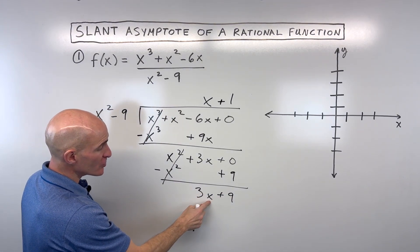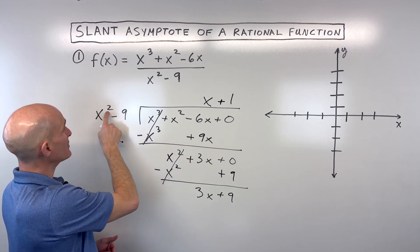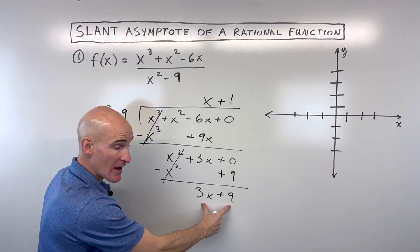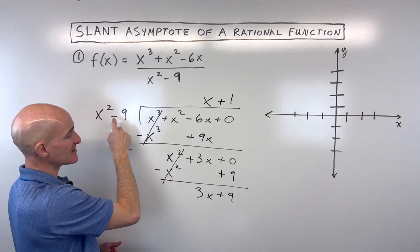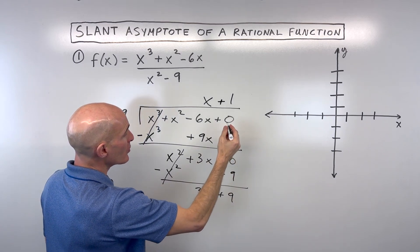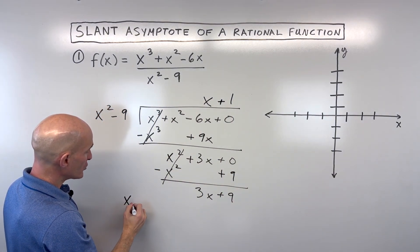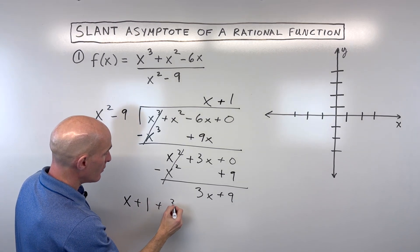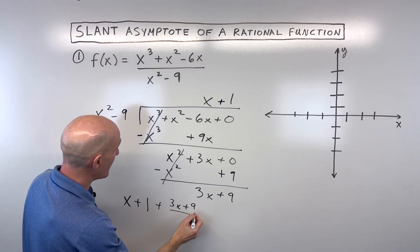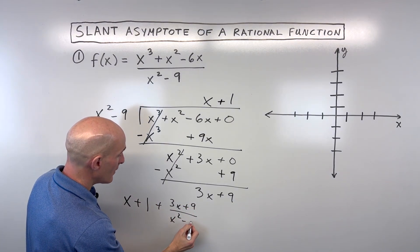Now when you get to where the degree here is lower than the degree here, this is going to be your remainder. So this is x to the first, this is x to the second. So we put our remainder over our divisor. Our final quotient here would be x plus 1 plus 3x plus 9 over x squared minus 9.